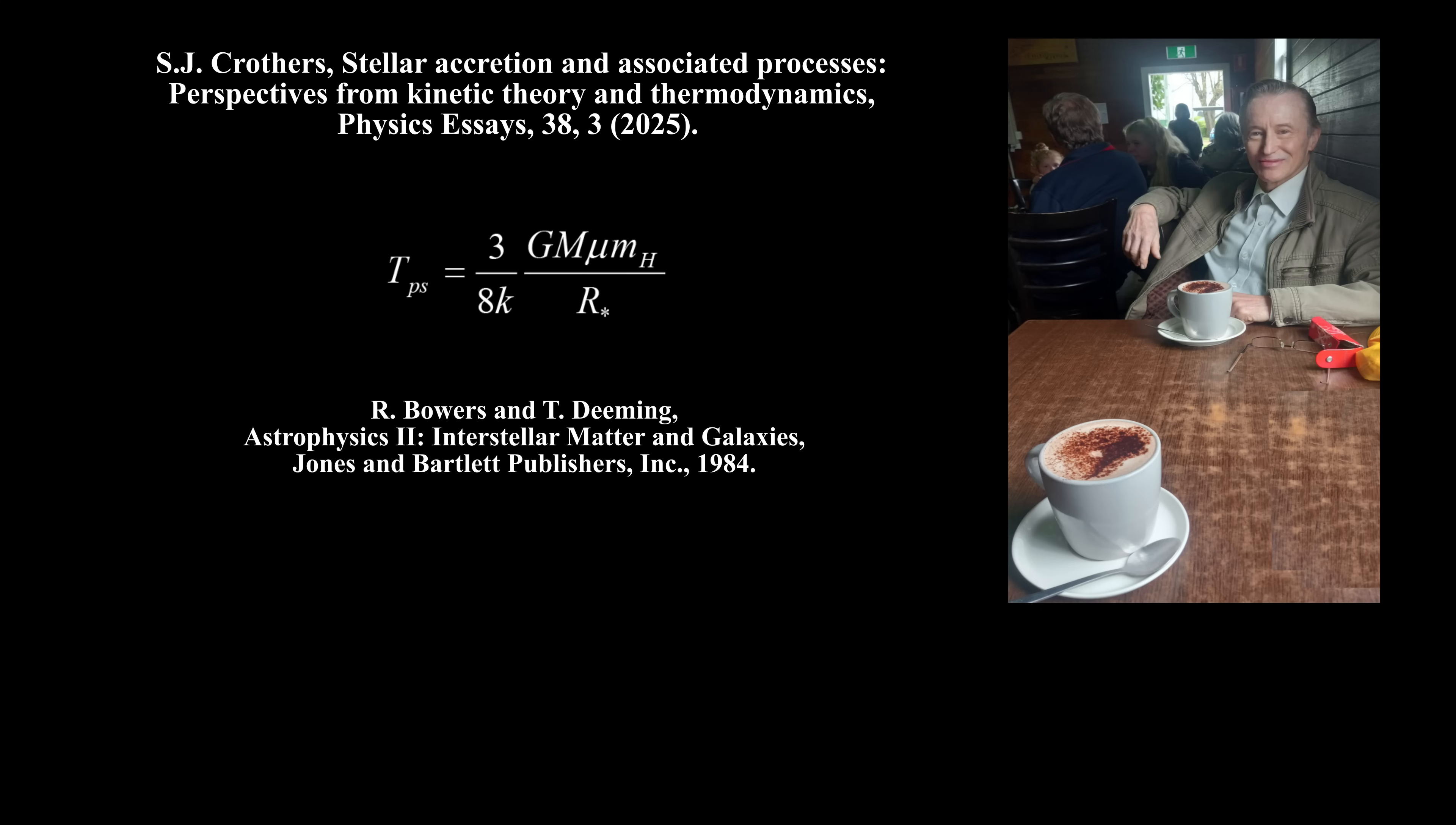According to Bowers and Deeming, the post-shock wave temperature of an optically thin ideal gas spherically accreting onto a star is given by this equation. The left side of this equation is homogeneous degree zero, but the right side is homogeneous degree two-thirds. In addition, it assigns temperature to gravitational potential energy. Consequently, it's false.